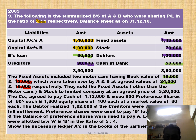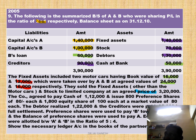They sold the fixed assets other than motor cars and stock to a limited company. The purchase consideration is Rs. 3,20,000 — this is already given in the question, so there is no need to calculate it. This is the lump sum method. The PC amount is Rs. 3,20,000.